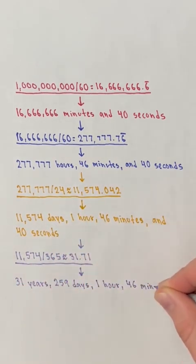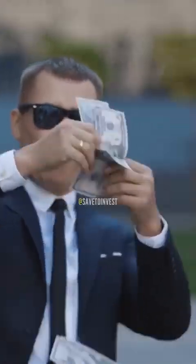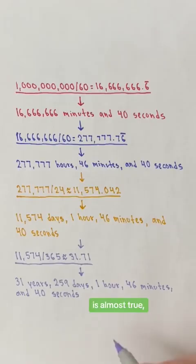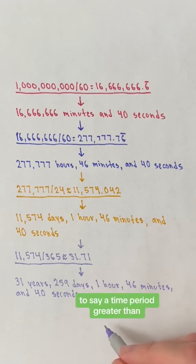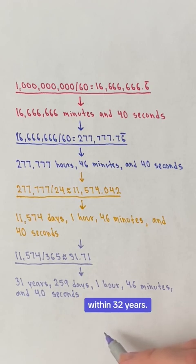259 days, 1 hour, 46 minutes, and 40 seconds. Therefore, you would be a billionaire within 31 years is almost true, but it would be more accurate to say a time period greater than the actual time it would take. For example, within 32 years.